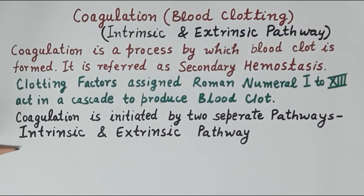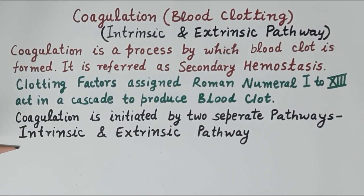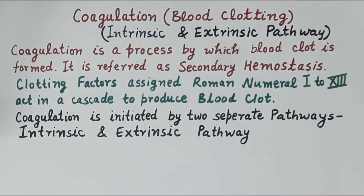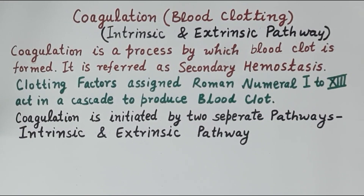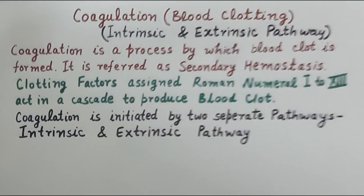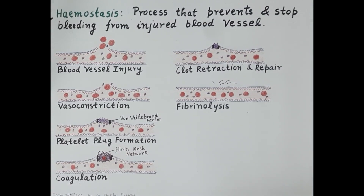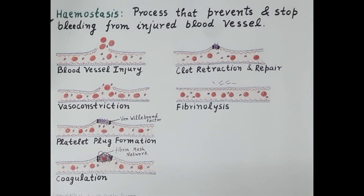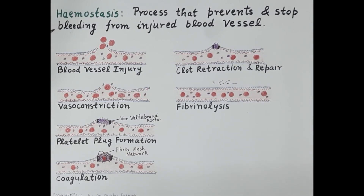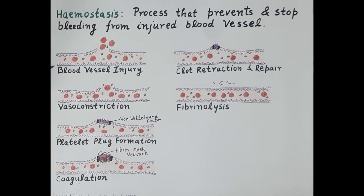Coagulation is initiated by two separate pathways: the intrinsic pathway and the extrinsic pathway. To understand coagulation, it is important to review the steps of hemostasis. Every step of hemostasis has been explained here with the help of a diagram.